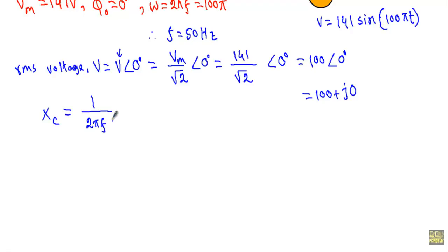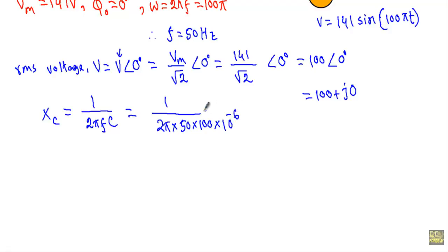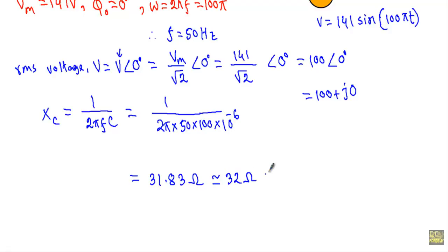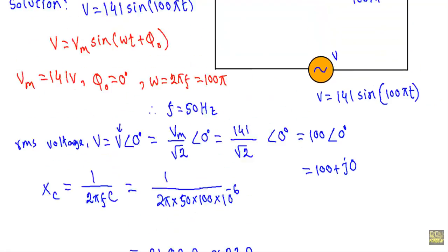The capacitance offers a capacitive reactance XC to current flow. XC equals 1 divided by 2πFC. With capacitance equal to 100 microfarad (100 × 10⁻⁶), we get XC equal to 31.83 ohm, which we approximate to 32 ohm.